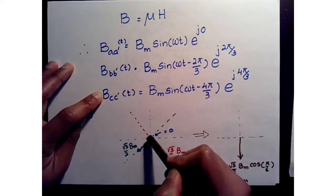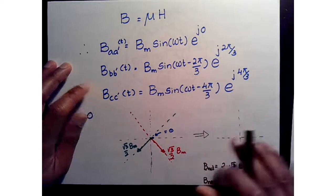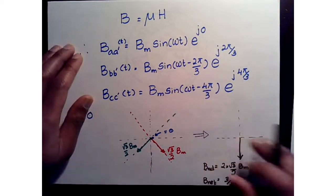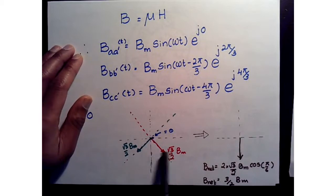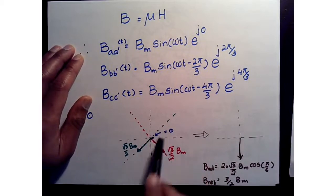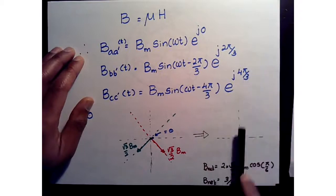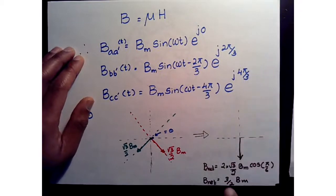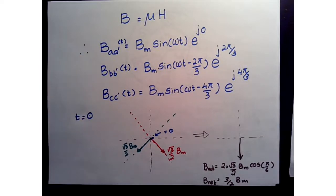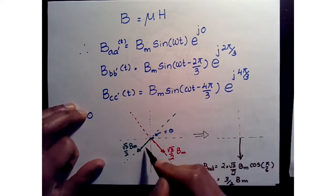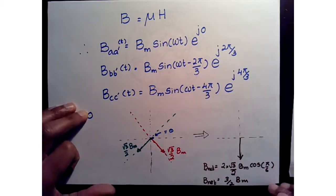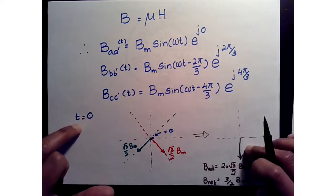At t = 0, because we're in the positive direction we have a negative current for the B and C windings. We have three vectors, one of which is zero. When we take the vectorial sum — considering the 30-degree (π/6) angles — the total flux density vector points downward with a magnitude of 3/2 · Bm, or 1.5Bm. That is the net flux at t = 0.